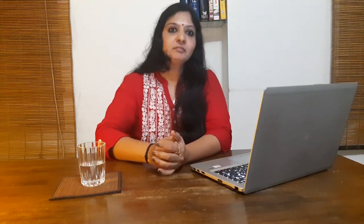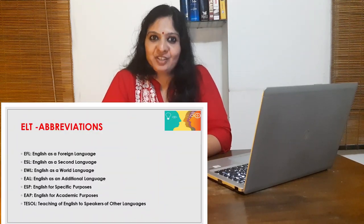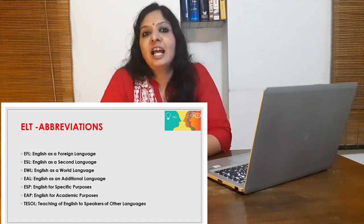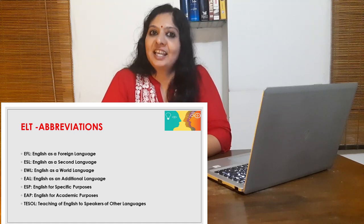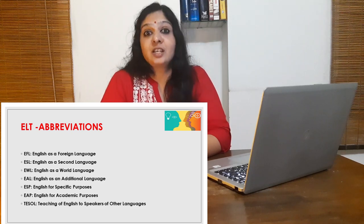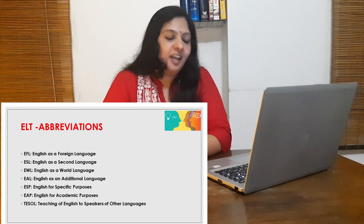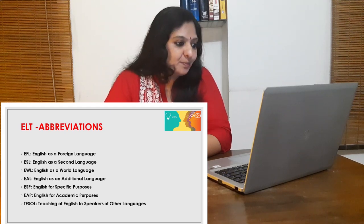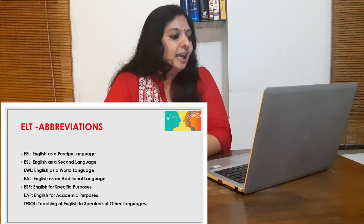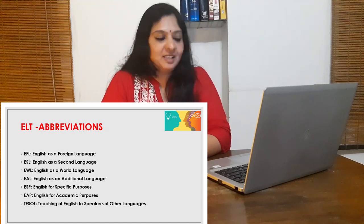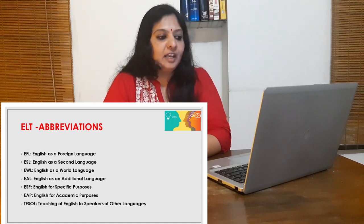Let me wind up with a few common abbreviations that you might come across while reading books on ELT. ELT — English Language Teaching. EFL — English as a Foreign Language. ESL — English as a Second Language. EWL — English as a World Language. EAL — English as an Additional Language. ESP — English for Specific Purposes. EAP — English for Academic Purposes. TESOL — Teaching of English to Speakers of Other Languages.